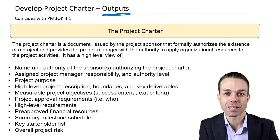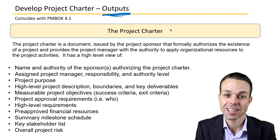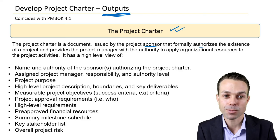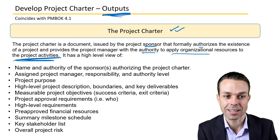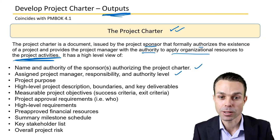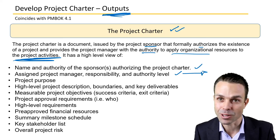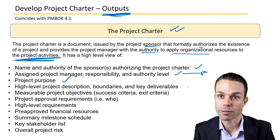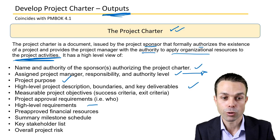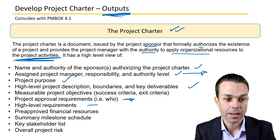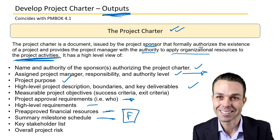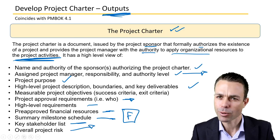Now let's look at the outputs of developing the project charter. The project charter itself is one of the outputs — it's the document issued by the project sponsor that formally authorizes the existence of the project and provides the project manager with authority to apply organizational resources. This document includes the name and authority of the sponsor, the assigned project manager and their authority level, the project purpose, high-level description, key deliverables, measurable project objectives, high-level requirements, approval requirements, pre-approved financial resources, summary of milestones, key stakeholders, and overall high-level project risk.